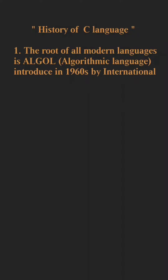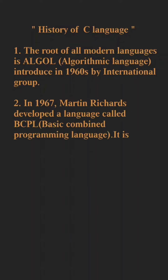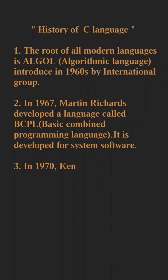After ALGOL, a new language called BCPL — Basic Combined Programming Language — was introduced by Martin Richards in 1967. It was developed for system software. After BCPL, Ken Thompson introduced the B language in 1970.